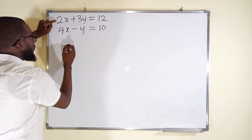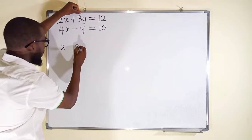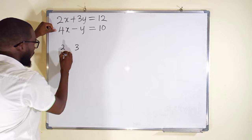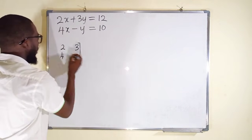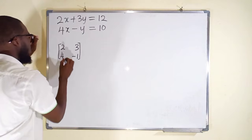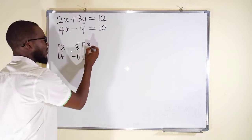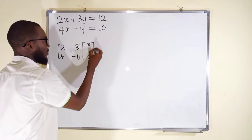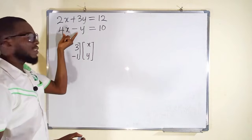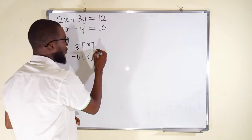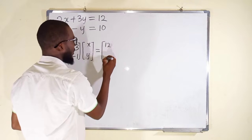We have the first coefficient equal to 2, then coefficient 3, coefficient 4, and coefficient negative 1. This is a matrix of order 2 by 2 multiplied by a matrix of X and Y. If you multiply these two matrices together, you shall obtain the original expression back. And this is equal to another matrix of the constants 12 and 10.